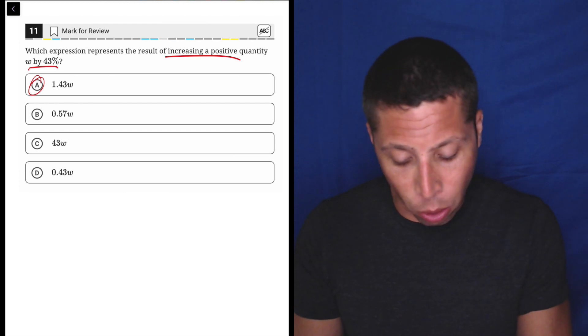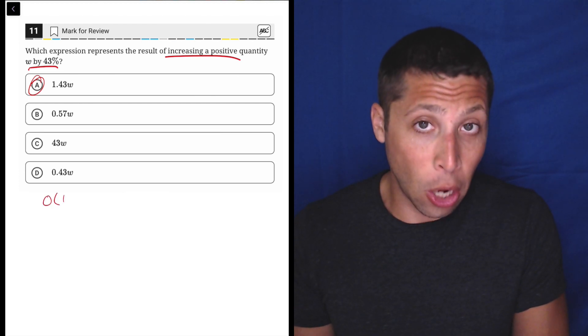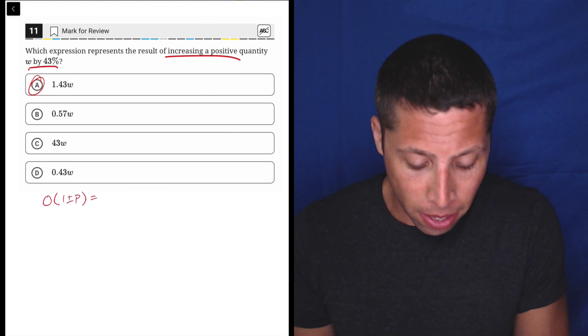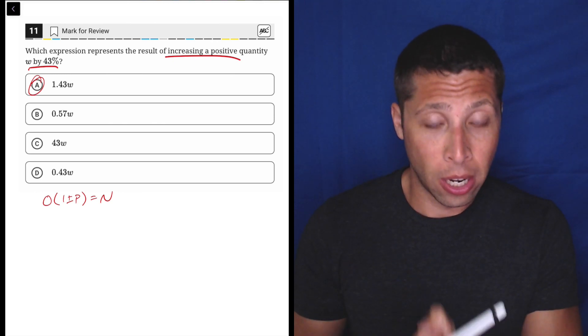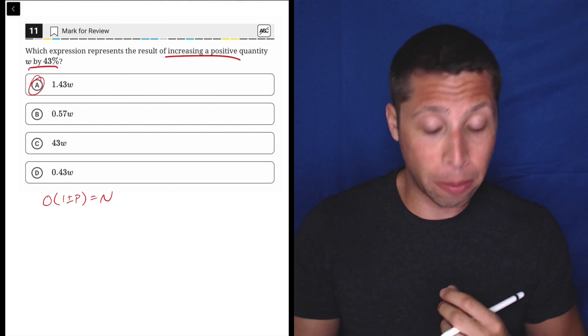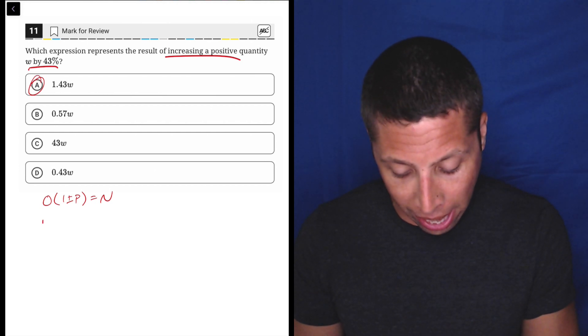There's another way we can think about it, though. It's using the version of the open formula that I made up that deals with a percentage change. So O stands for the original amount. In this case, the original amount that we have is the W.